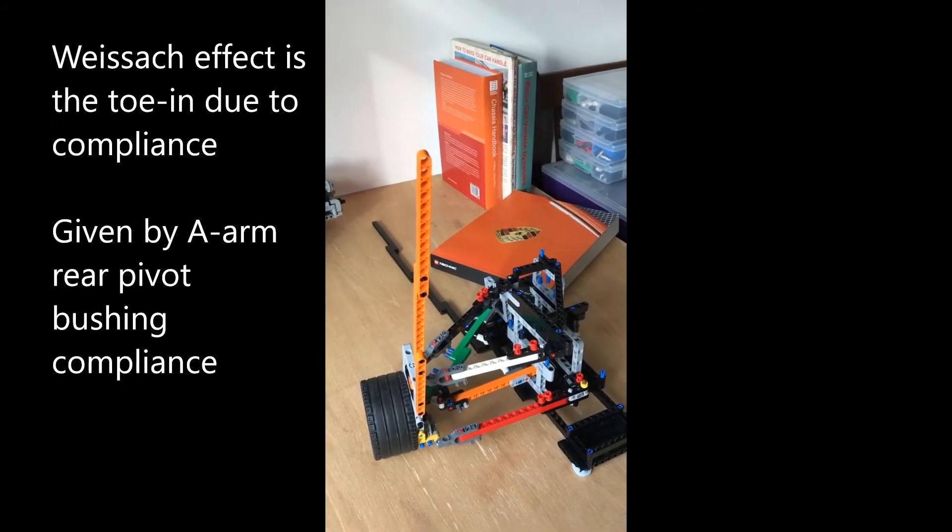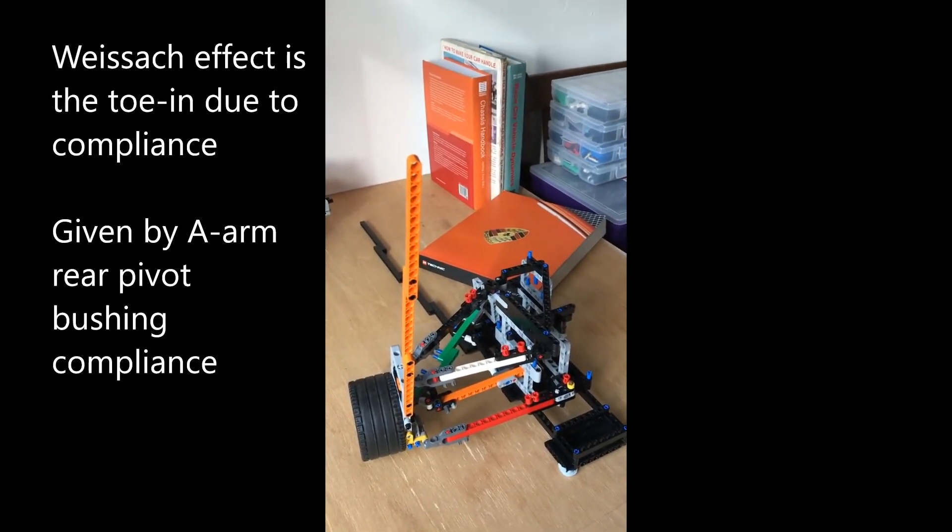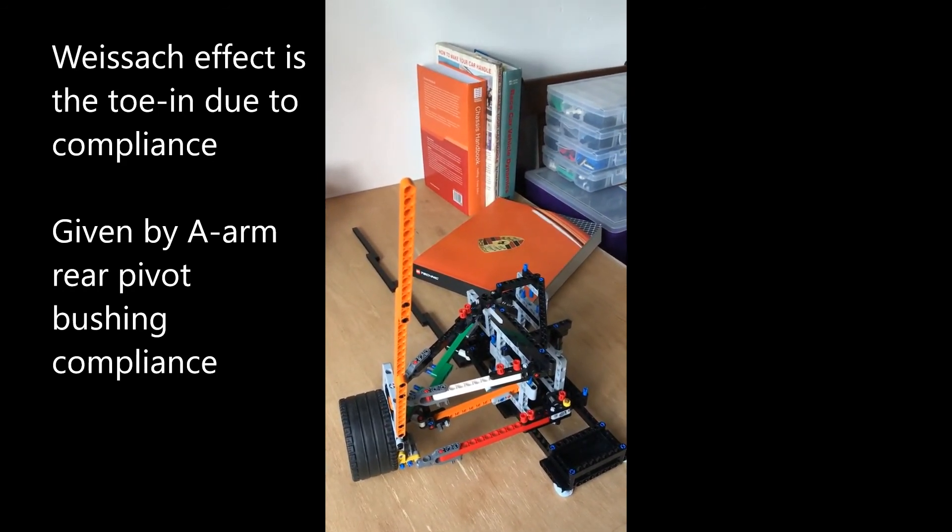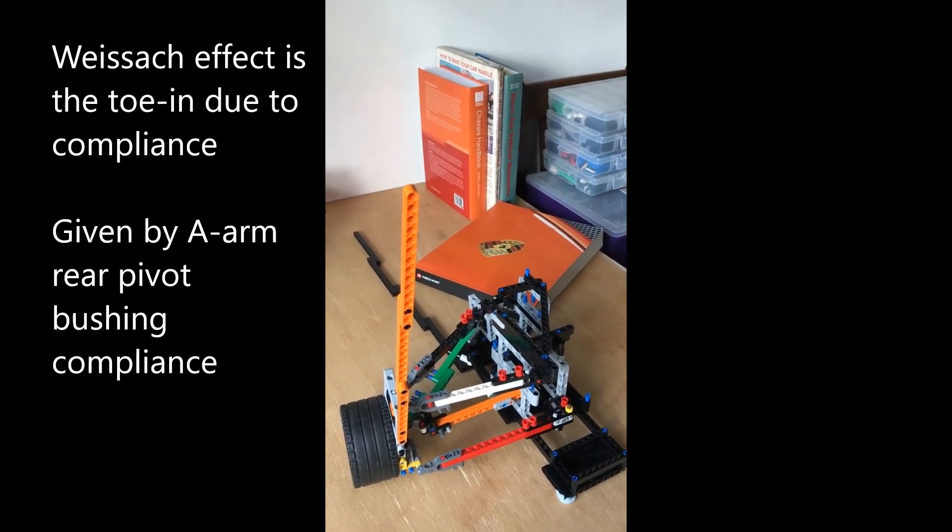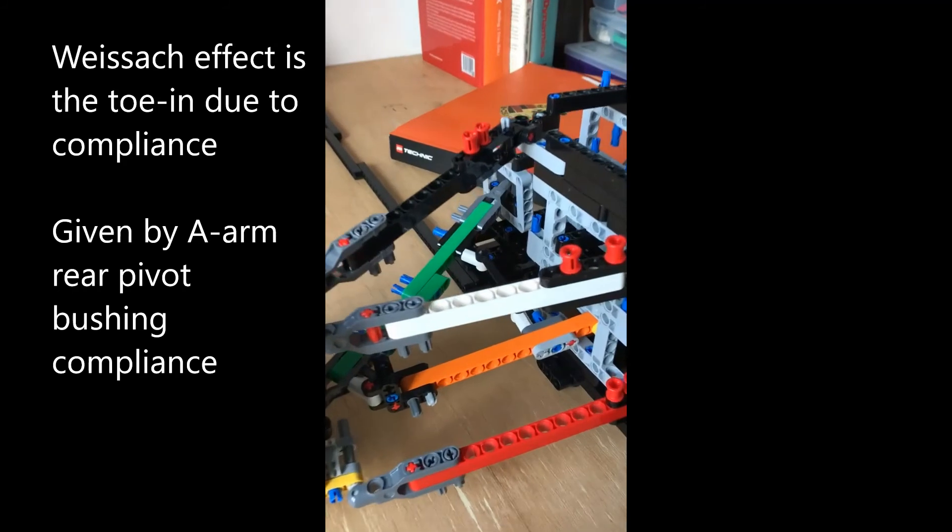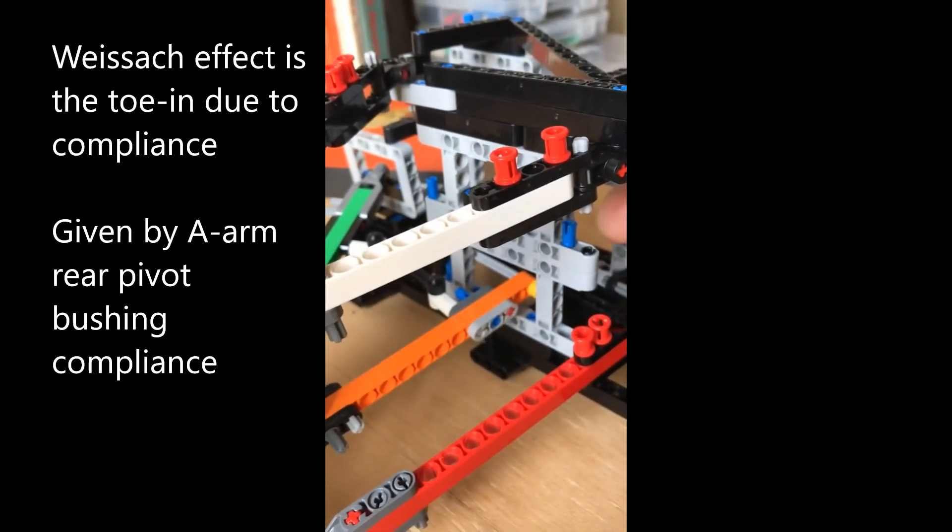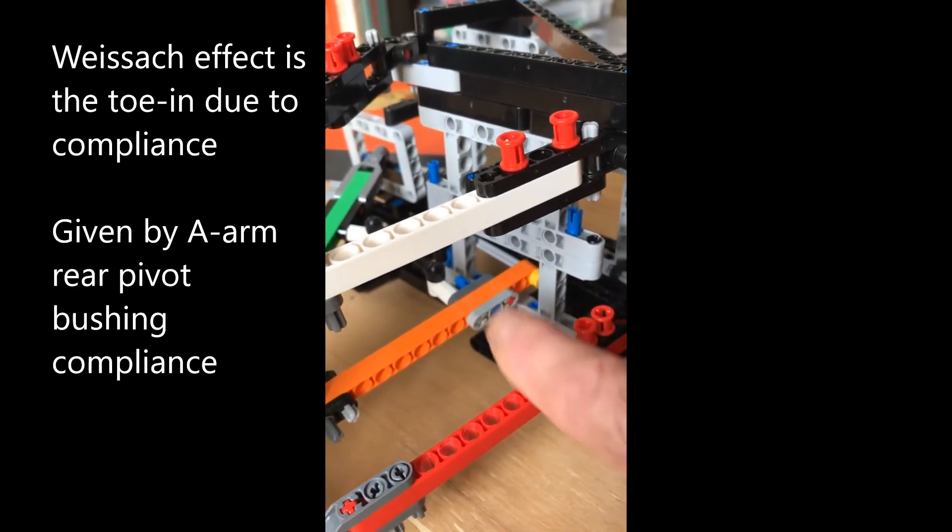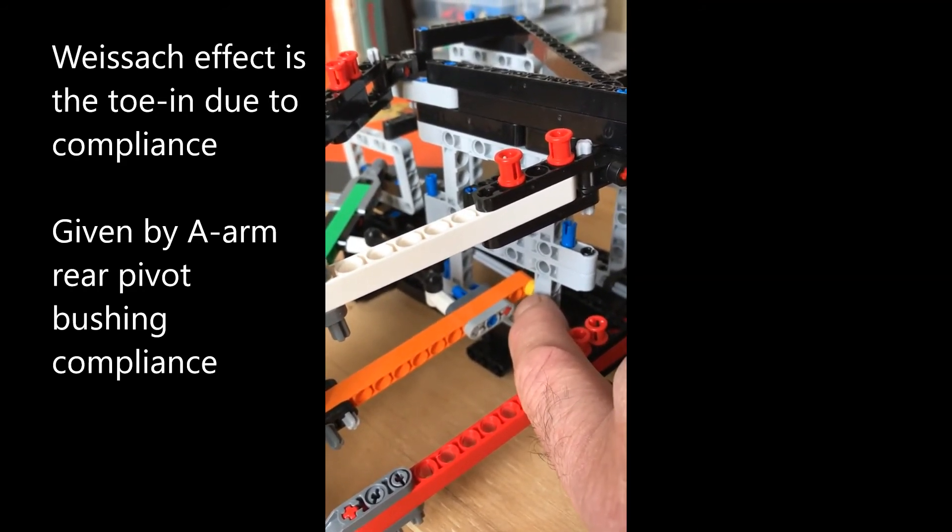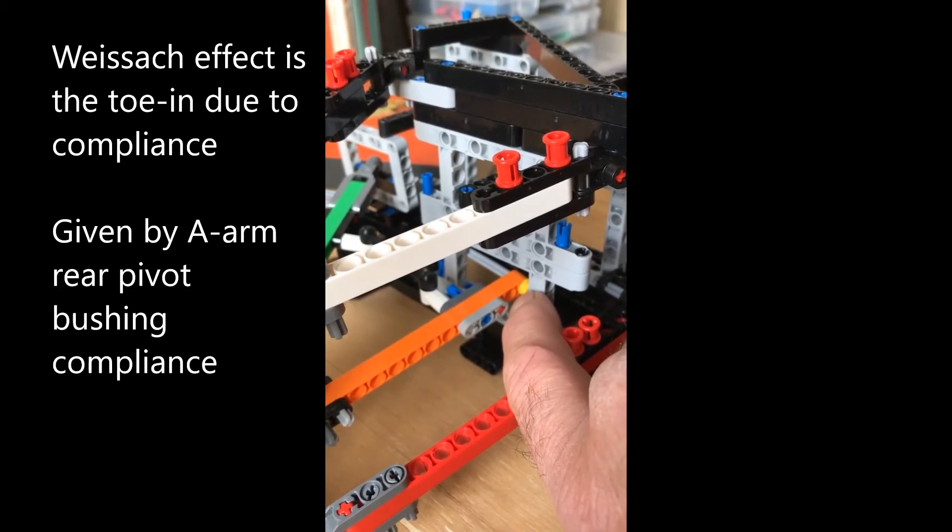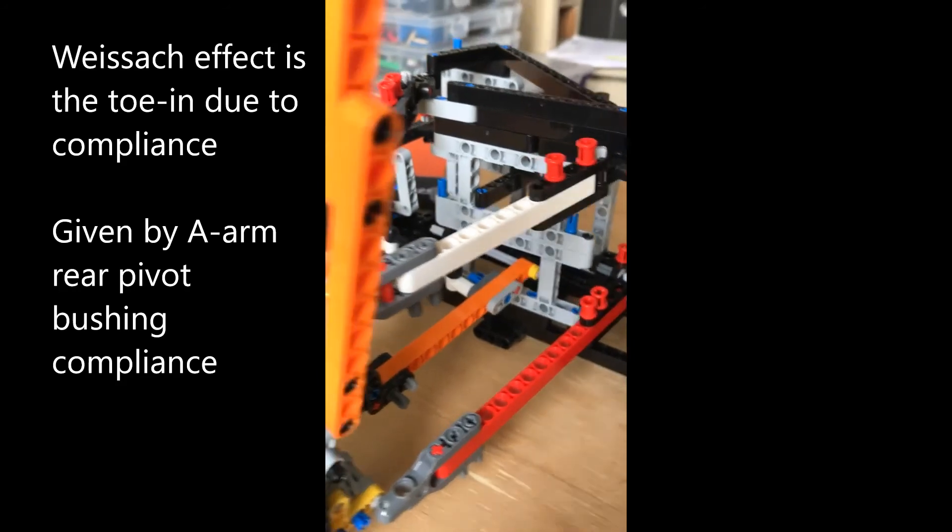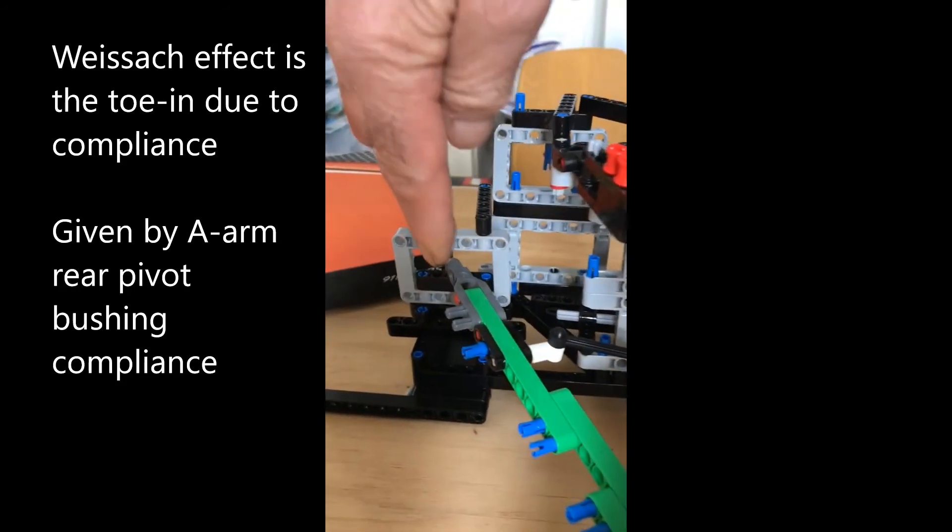The Weissach effect with this axle is given by, not the kinematic toe, but by compliance in toe. And the compliance that we referred to in the bush around the forward part, or the rear part of the A-arm. So this is a soft rubber bushing designed to be soft and spongy. Whereas at the front of the A-arm we have the ball joint.